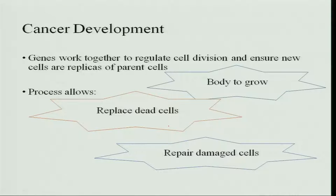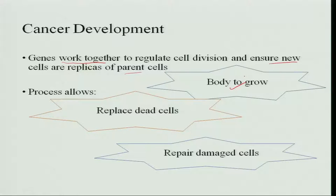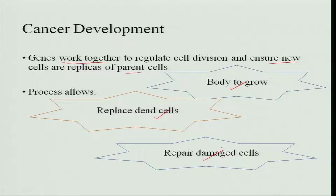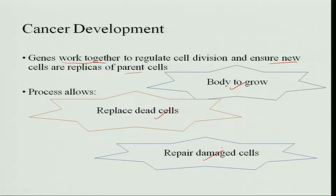In normal cancer development, genes work together and regulate cell division, ensuring new cells are replicas of the parent cells. This process allows the body to grow, replace dead cells, and repair damaged cells — that is the normal course of process that happens in the cells.